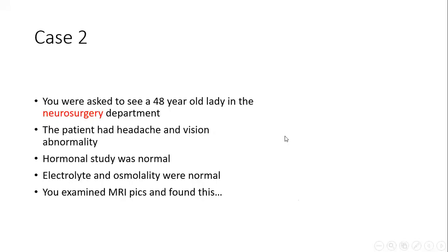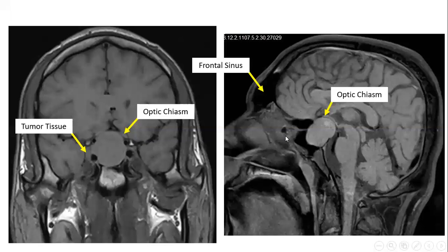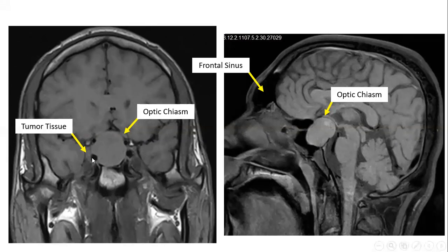A second important point: the tumor respects the carotid artery. We see the internal carotid artery is enclosed by the tumor tissue, but it is not restricted or compressed.